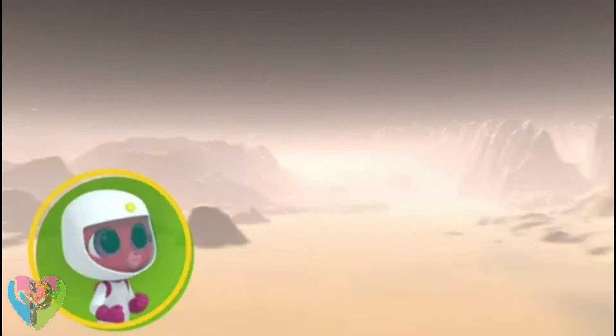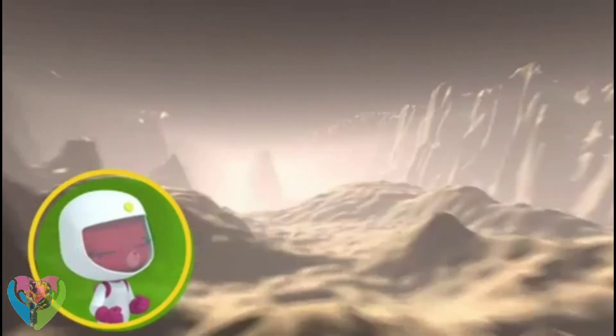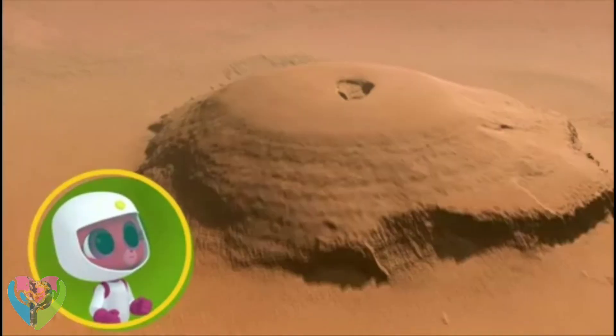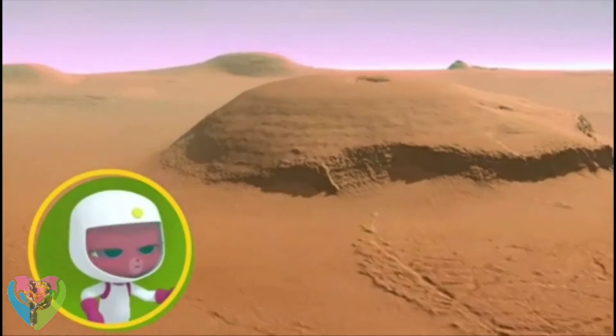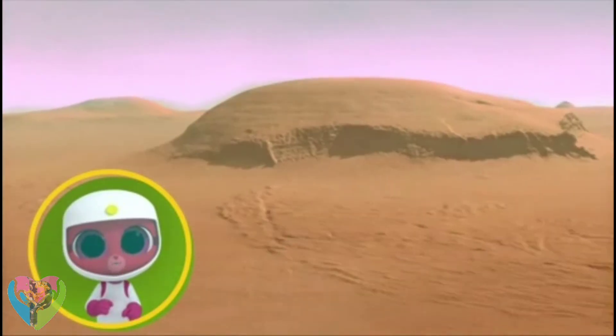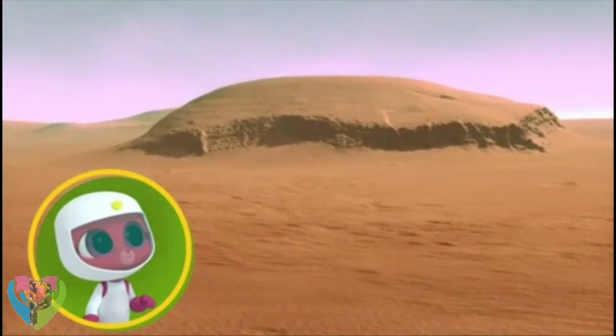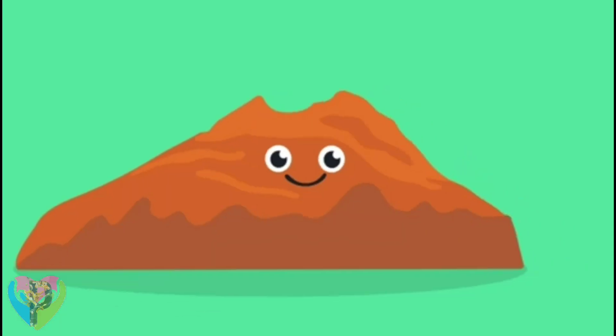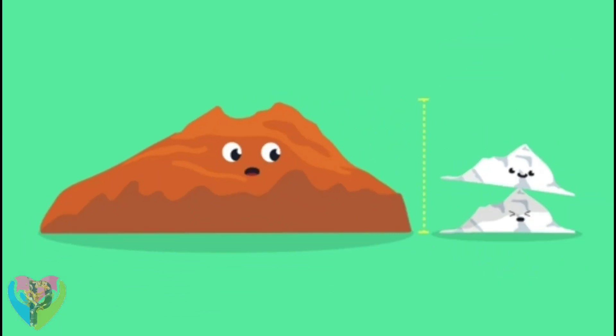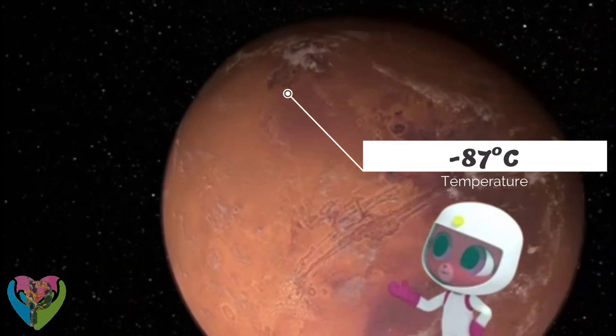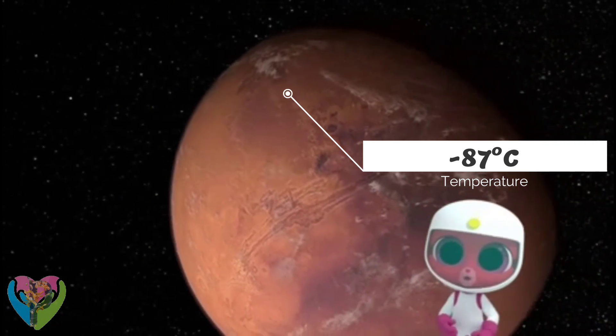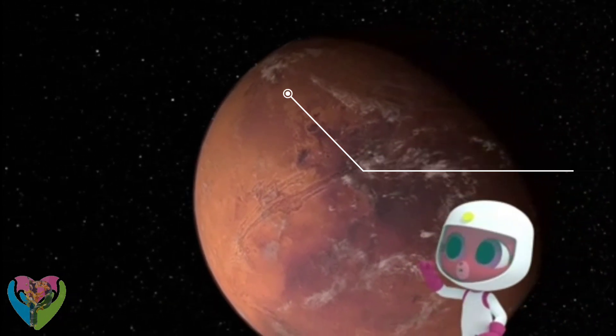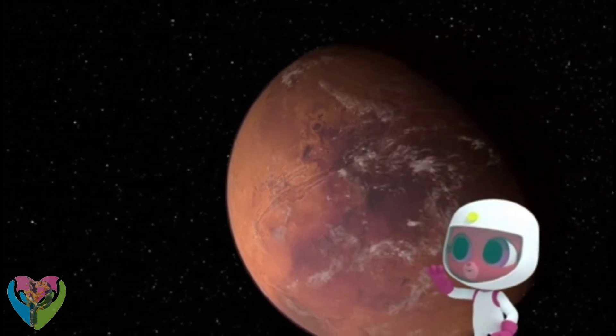That's Valles Marineris, the deepest canyon in the solar system. And that's one super high mountain! It's called Olympus Mons, the largest volcano in the solar system. It's three times the height of Mount Everest on Earth. Well, Mars certainly holds a few records in the solar system. So long, Mars Almighty! Goodbye!